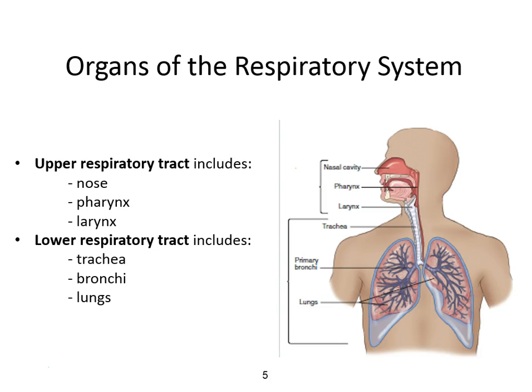The respiratory system is divided into upper and lower respiratory tracts. The upper respiratory tract includes the nose, throat, and voice box — infections here involve a stuffy or runny nose and sore throat. The lower respiratory tract includes the trachea, bronchioles, and lungs — conditions like pneumonia and bronchitis are considered lower respiratory infections.